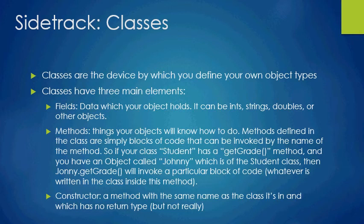Let's talk a little bit more about classes. Classes are the device by which you define your own object types. They have three main elements — I want you to remember these so that when you're asked to write a class you know you need to write three things. First are fields — those are the variables that the class holds. For example, the baseball player class had fields like number of times at bat, singles, doubles, triples, and home runs. That's data held inside the class.